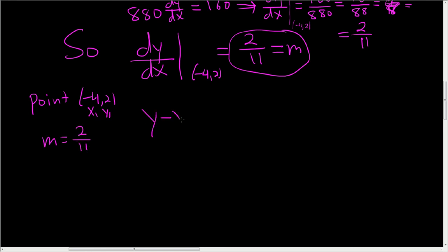And our slope is 2 over 11. So to finish, we use the formula y minus y1 is m times x minus x1. All right, so y1 is 2. So y minus 2. m is 2 over 11. And let's see, x plus 4. Distribute, we get y minus 2.